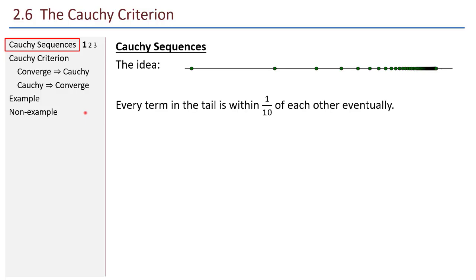Here's the idea. We have a sequence on this number line, and the terms of the sequence are plotted out. It looks like it's converging to something on the right. In the past, to determine if a sequence converges, I say there's some L, and there's some index N, so that once I get to term a sub N, all the terms after a sub N are within epsilon of L.